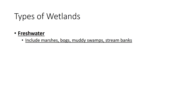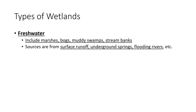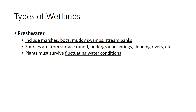Freshwater wetlands include marshes, bogs, muddy swamps, and stream banks, fed by surface runoff, underground springs, and flooding rivers. If you're driving to Tri-Cities past the paper mill before you get to Pasco, Highway 12 drives right through a wetland — that would be a freshwater wetland.